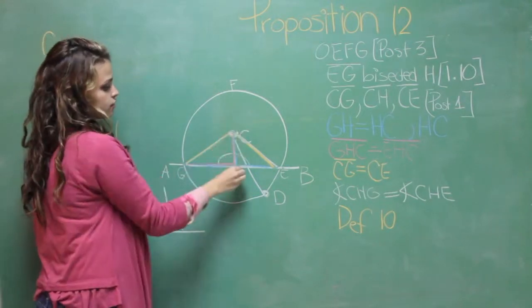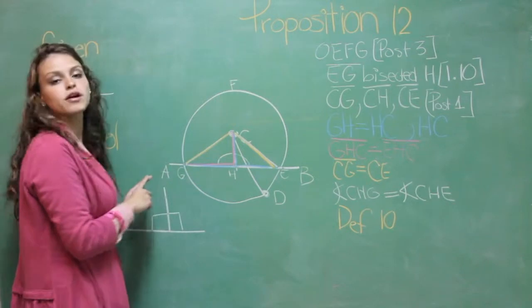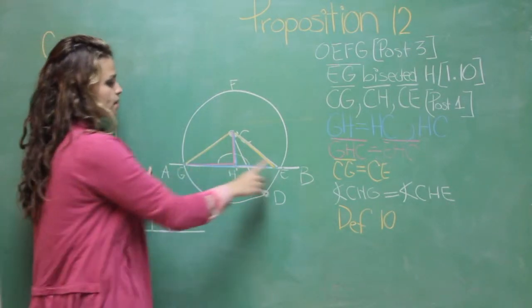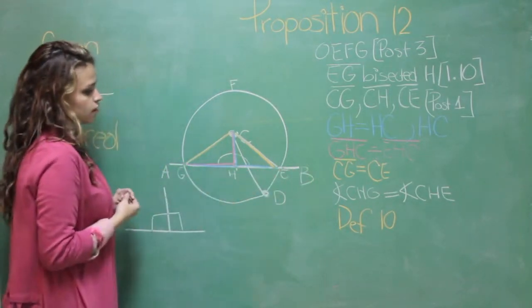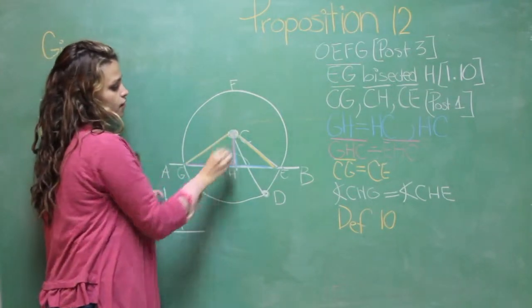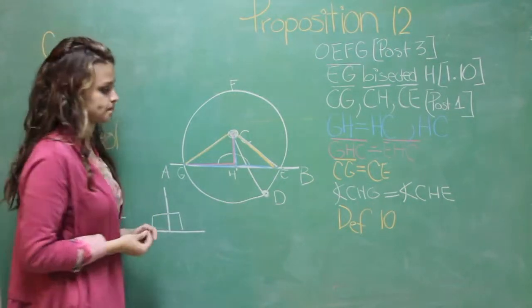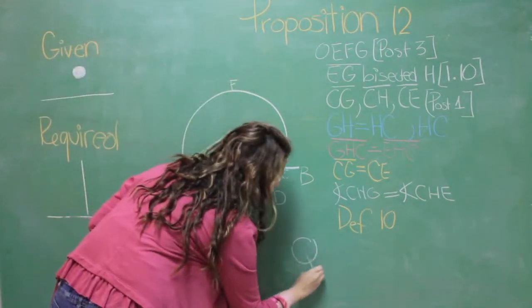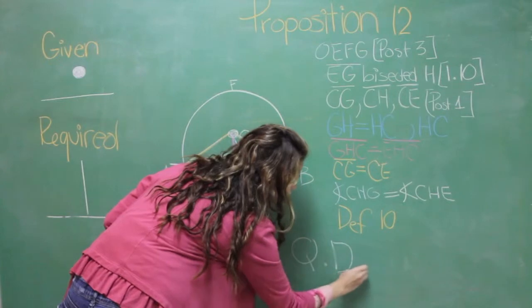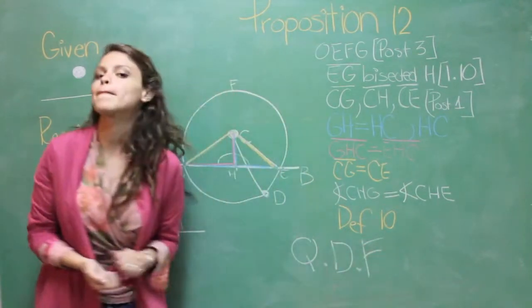Therefore, CH is a straight line that is perpendicular to the infinite line AB, and it is created because of the point C that is not part of the line.